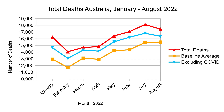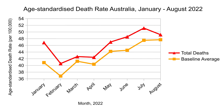If we take out the COVID deaths, as many statisticians are doing, then we can still see that every month has experienced excess deaths. These excess deaths are not occurring due to COVID. This is the same data but shown using the age-standardised death rate per 100,000 population. The same trend is clearly evident — people have been dying at a greater rate in Australia over the course of this year.